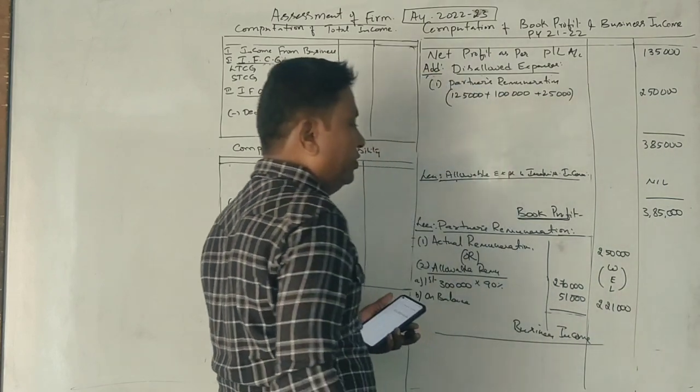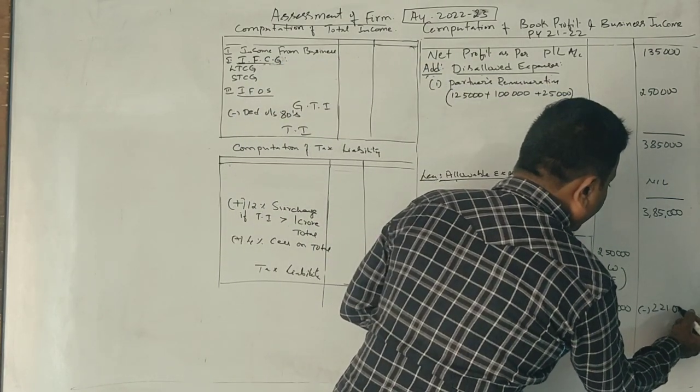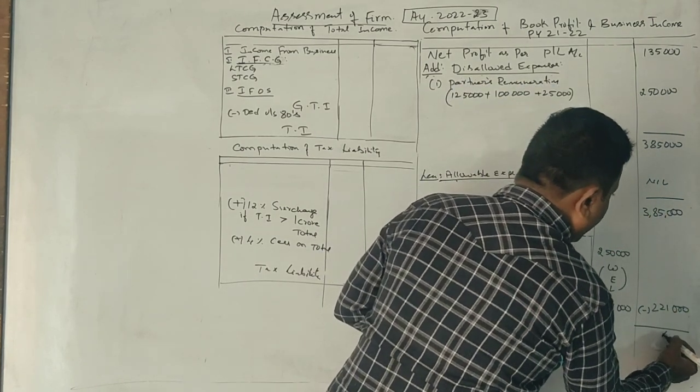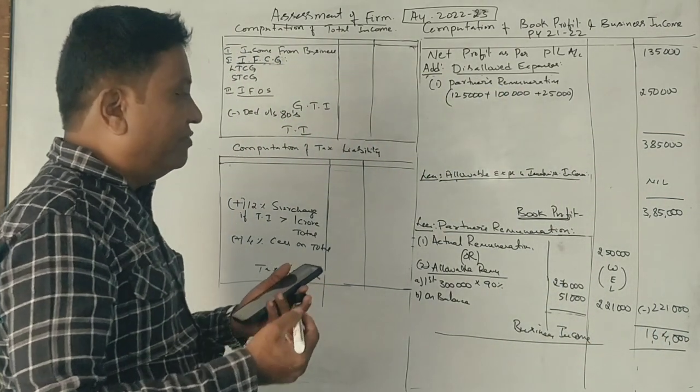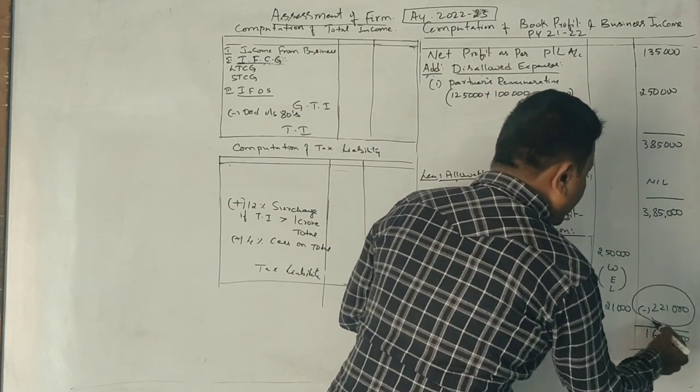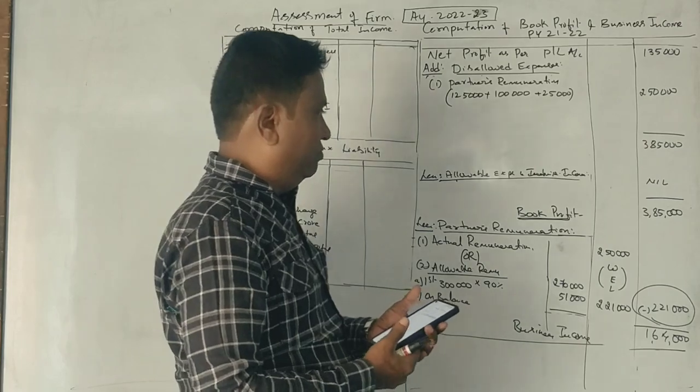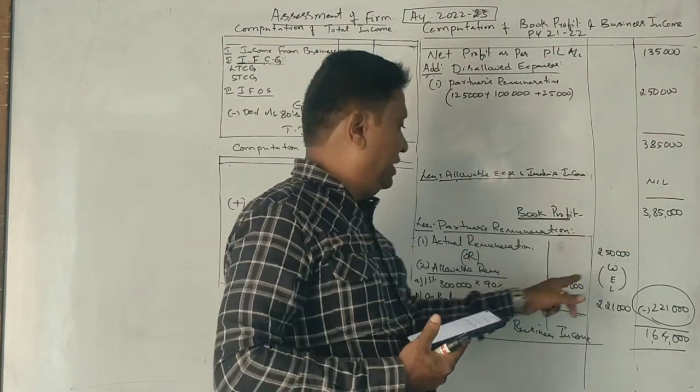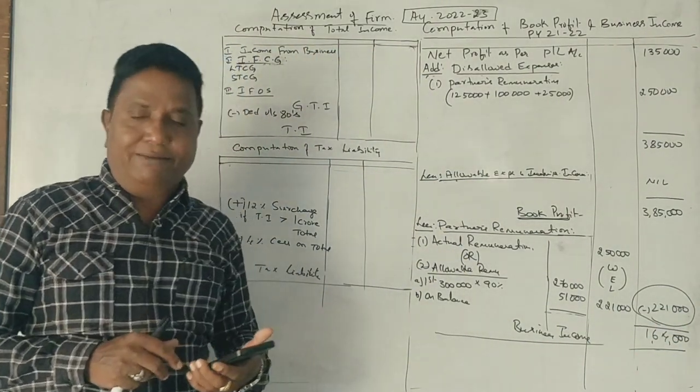From book profit of 3 lakhs, the calculation gives Rs. 2,21,000 allowable and Rs. 1,64,000 inadmissible. This is income from business, and allowable remuneration is Rs. 2,21,000. Book profit method gives 6 lakhs. Got it.